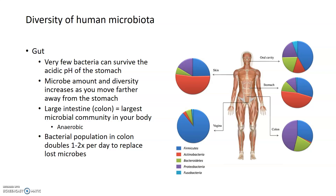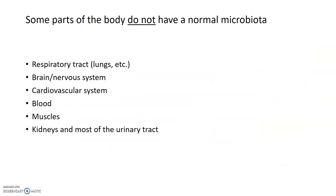Not every part of the body has a microbiome — some parts are not meant to be inhabited by microbes. The respiratory tract and lungs specifically have cilia designed to beat out any dust, dirt, and microbes, because bacteria inhabiting the lungs causes infection and disease. Similarly, the brain, cardiovascular system and blood, muscles, kidneys, and most of the urinary tract do not have a normal microbiome. When microbes do inhabit these areas it leads to serious bacterial infections that are not only painful but can also lead to death, as in the case of infections in the blood or nervous system.